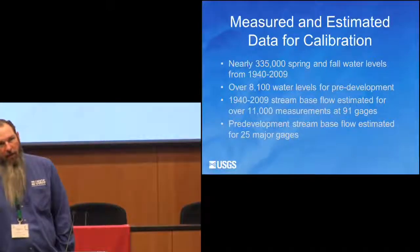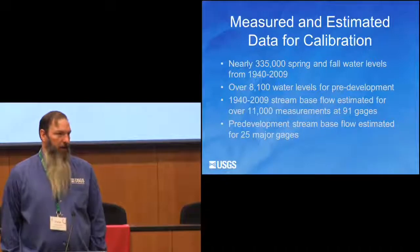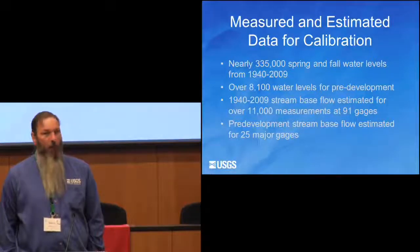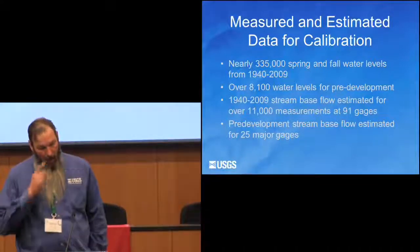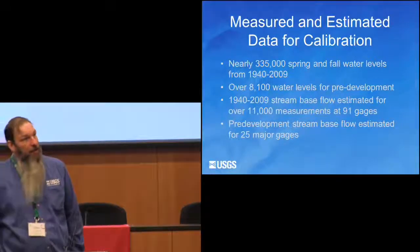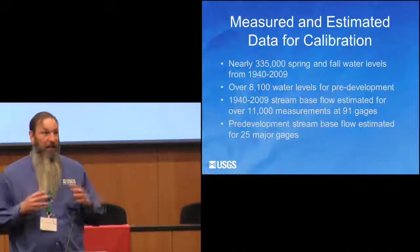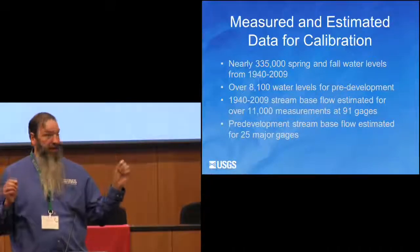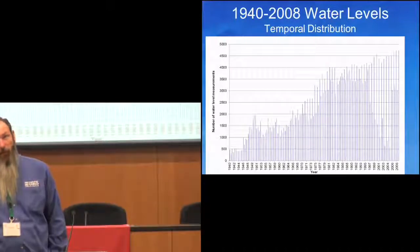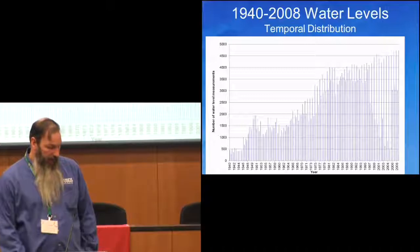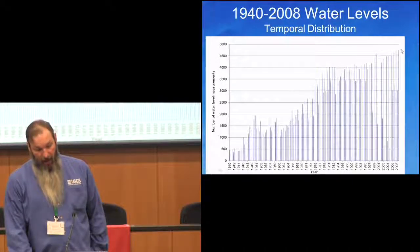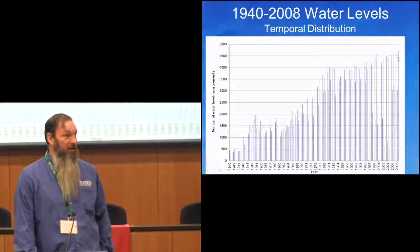For the groundwater flow model, we used all available data for calibration. For the 1940 through 2009 period, we used about 335,000 water level measurements from spring and fall water levels, about 8,000 pre-development water levels, and about 11,000 stream base flow estimates at 91 different gauges. Early in the northern high plains record, there were very few measurements — less than 500 per season — while later we have over 4,000 per season.